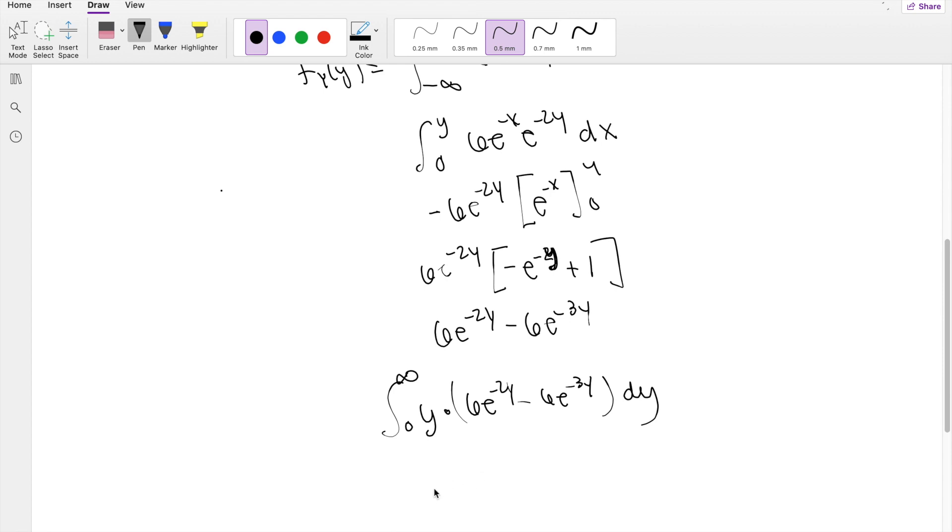Alright, let's just dive right in. So this is essentially just two integrals. The integral of 6y e^(-2y) minus the integral of 6y e^(-3y), and they're both integrating in terms of dy.